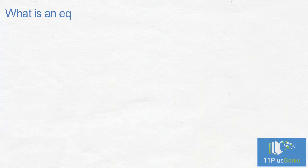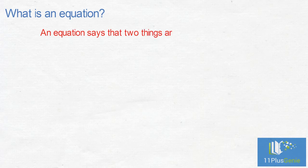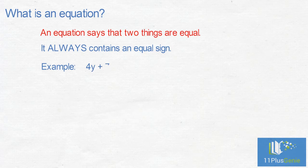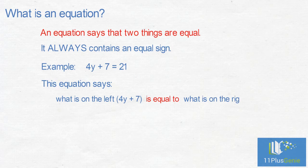What is an equation? An equation says that two things are equal. It always contains an equal sign. An example of an equation is 4y add 7 equals 21. This equation says what is on the left, 4y plus 7, equals what is on the right, 21.